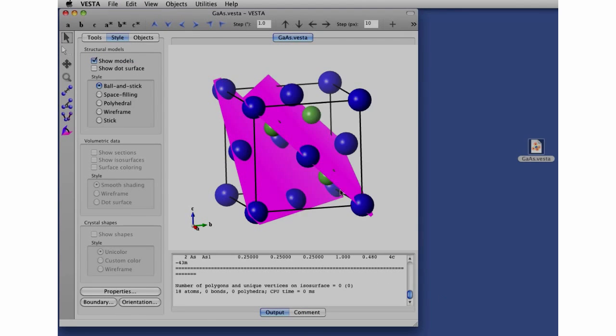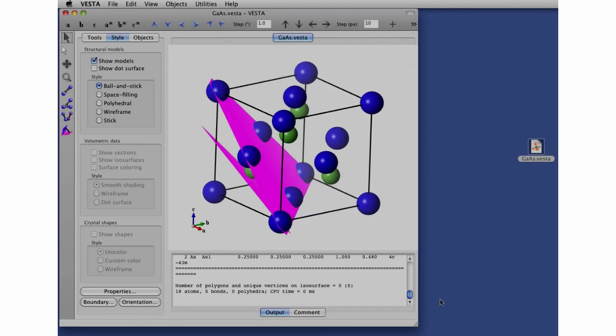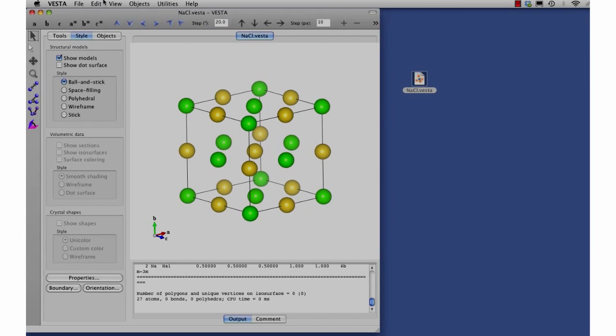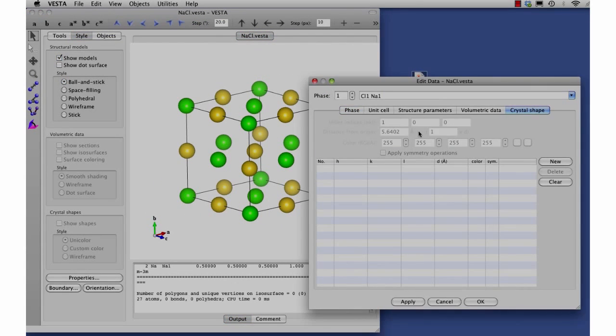Earlier we talked about facets. Can we visualize those, too? Oh, behold the power of VESTA. We'll go under Edit, Edit Data, Crystal Shape. Let's start with something simple. A cubic crystal with 100 faces.